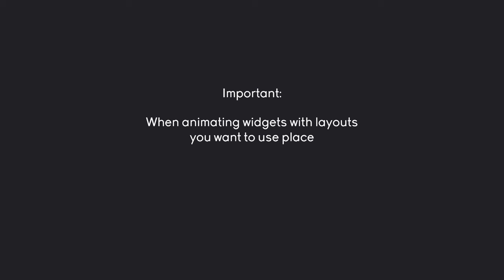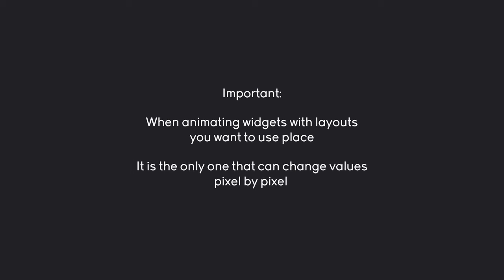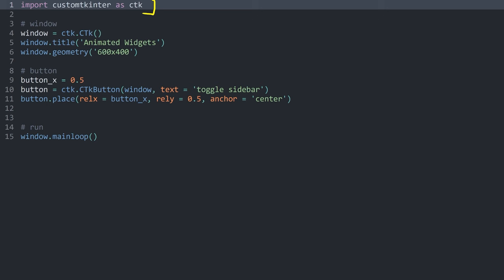There is one more thing to cover: when you are animating widgets you want to use place, at least when it comes to layouts. The simple reason is that only place can give you pixel-by-pixel positions. Imagine using the grid method for animations — inside the grid you can only specify the current cell, you couldn't move a widget by one pixel to the right. Only place can do that. You could totally use grid for animations but it just wouldn't look good. I am using CustomTkinter to make all of this look good, but all of this would also work with normal tkinter.